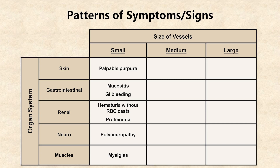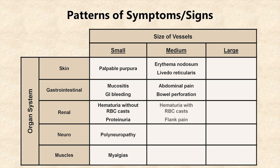A medium vessel vasculitis can result in two skin conditions called erythema nodosum and livedo reticularis. Patients can get abdominal pain and rarely bowel perforations. In the kidneys, damage is not limited to the glomeruli, so now there may be hematuria with RBC casts, along with flank pain from ischemia. In the brain, patients can get a wide variety of mental status changes, from somnolence to psychosis, along with strokes. In the muscles, they get myositis, which differs from myalgias in that there is usually lab and pathologic evidence of muscle damage, such as an elevated creatine kinase.